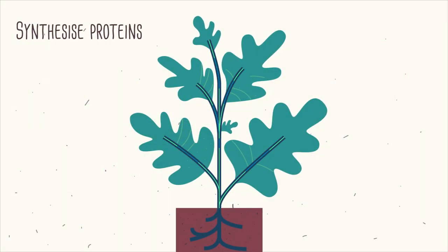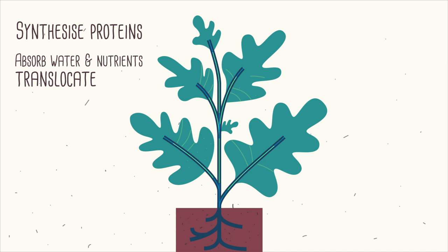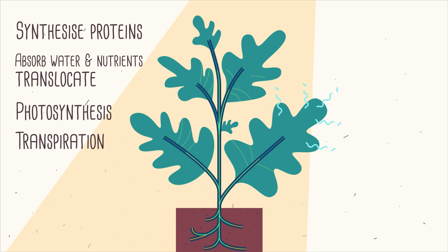A healthy plant can synthesize proteins in order to grow, absorb water and nutrients and translocate them to where they are needed, perform photosynthesis and lose by-products through the roots and through transpiration, and reproduce in order to bear fruit or seeds.